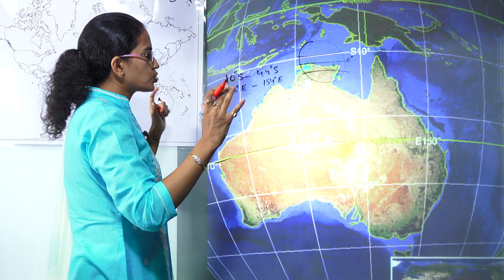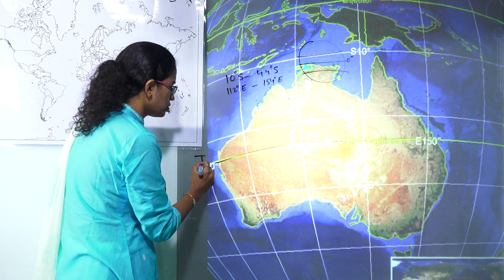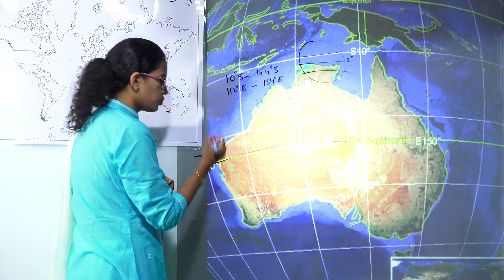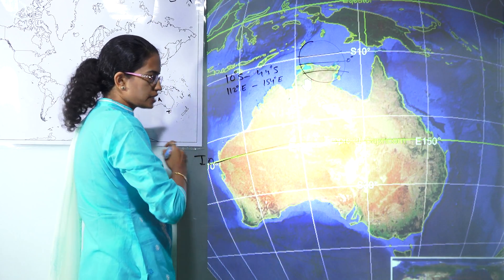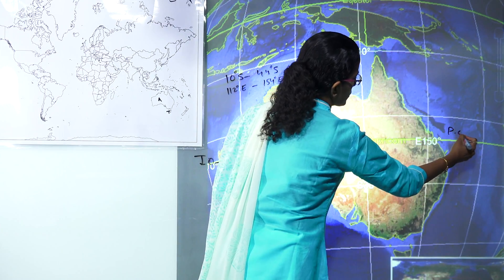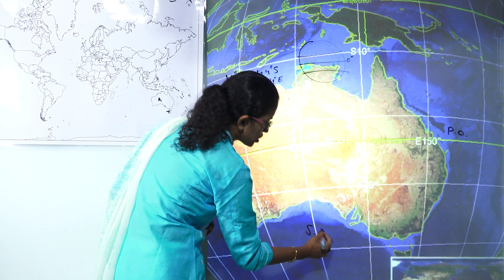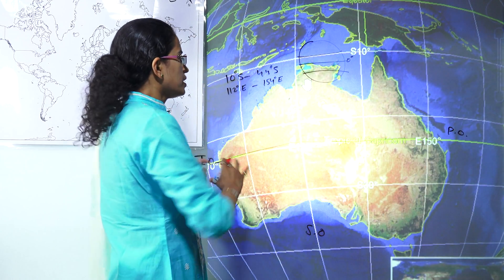If we talk about the oceans: you have the Indian Ocean towards the west, the Pacific Ocean towards the east, and the Southern Ocean towards the south.